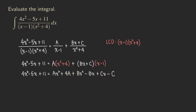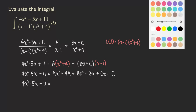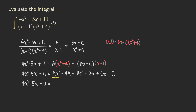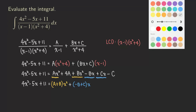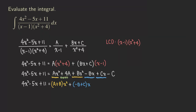So we get 4x squared minus 5x plus 11 equals — let's see. We have Ax squared and Bx squared, giving us (A plus B) times x squared. Next, we have negative Bx plus Cx, giving us (negative B plus C) times x. And the constant terms: 4A and minus C, giving 4A minus C.